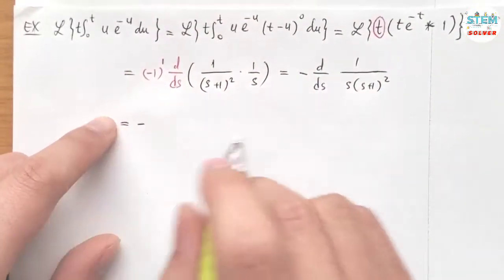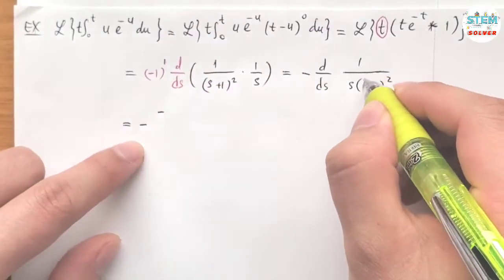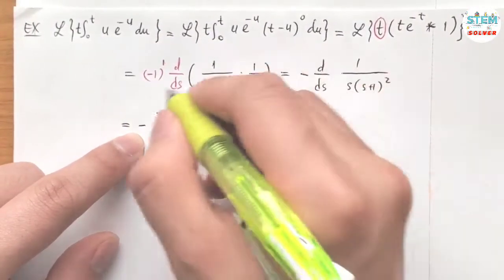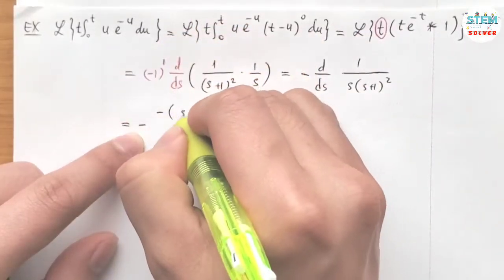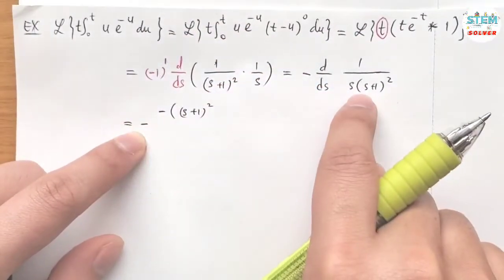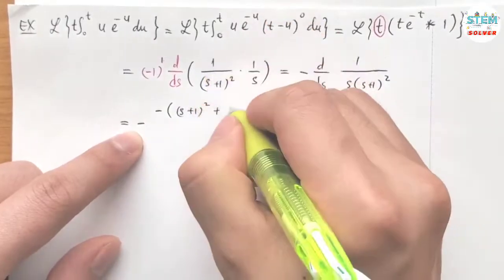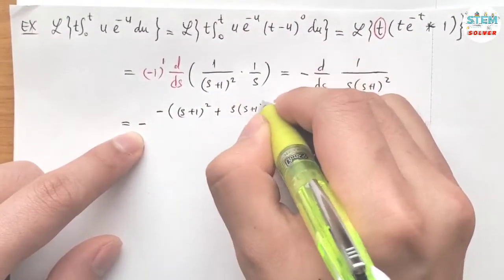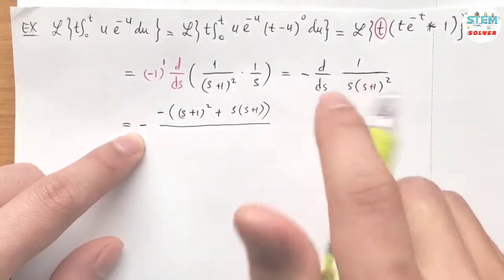Now take the derivative of this. I have negative at the bottom. Top times derivative at the bottom. So derivative of this times that plus this times derivative of this. And all of this divided by the bottom squared.